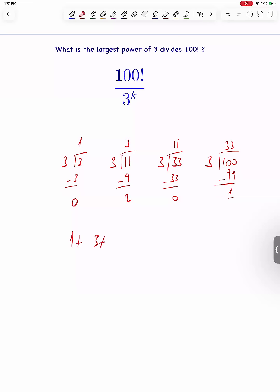If we add this quotient, 1 plus 3 plus 11 plus 33, we get 48, and 48 is the largest power of 3 divides 100 factorial evenly. 100 factorial is divisible by 3 to the power of 48. Answer is 48.